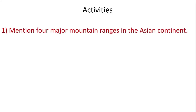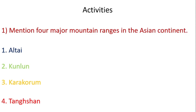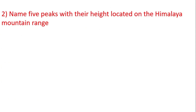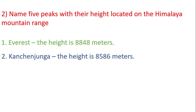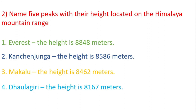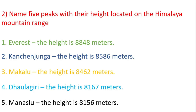Let's move on to some activities. Question 1: Mention four major mountain ranges in the Asian continent. Pause the video and write the answers. Altai, Kunlun, Karakoram, Tian Shan. Question 2: Name five peaks with their height located on the Himalaya mountain range. Everest — 8,848 m; Kanchenjunga — 8,586 m; Makalu — 8,462 m; Dhaulagiri — 8,167 m; Manaslu — 8,156 m.